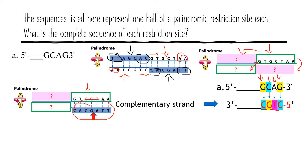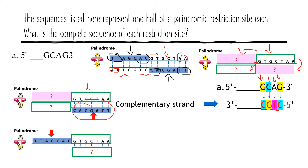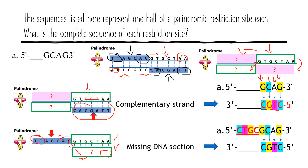Now we have this complementary strand. If you remember, you have the other section, but remember they run in opposite directions. So this one will be at the extreme, and here you have C-A, so here you have A and C going in the opposite direction. The next step: in the extreme you have C, then T, then G, and then C. So that was pretty easy. Let's go and try to do the next one.